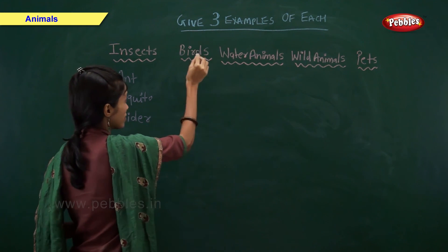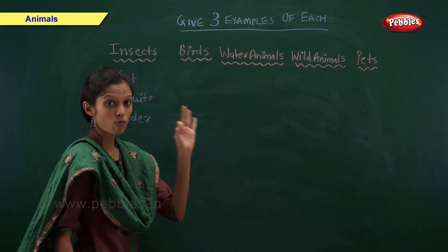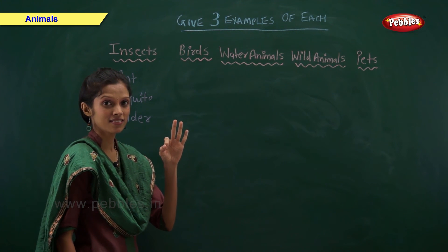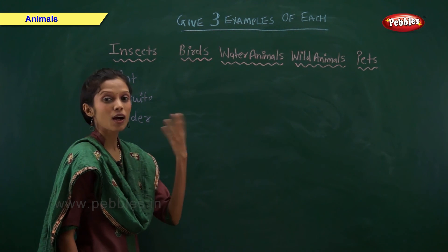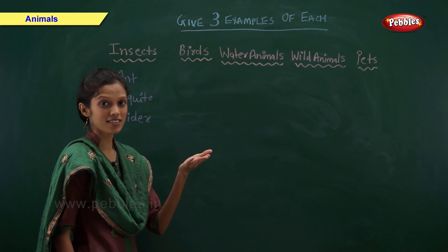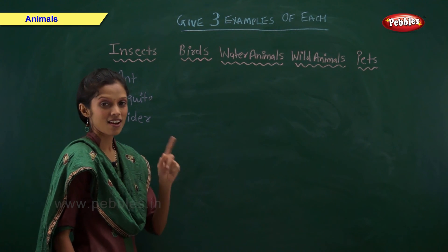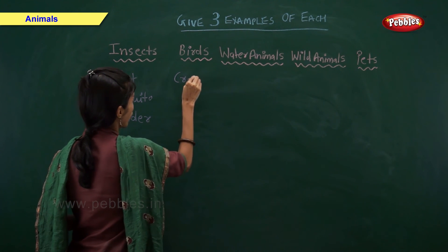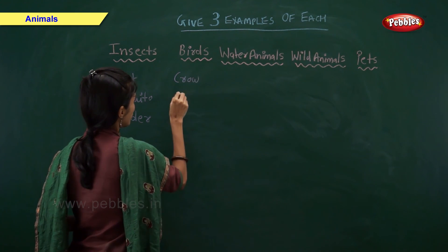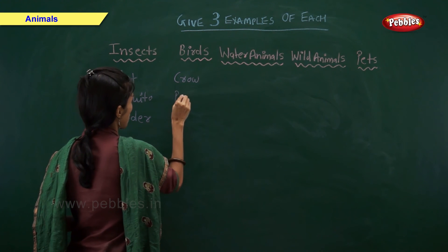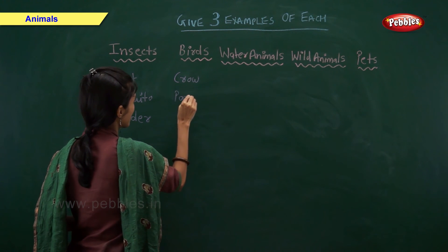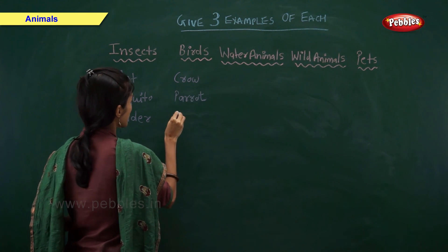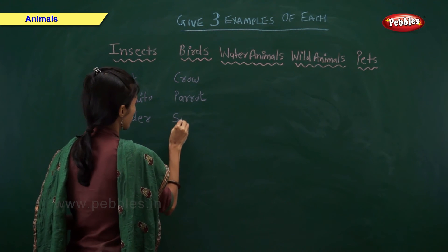Birds — give me three examples of birds. Come on fast. Right: crow, parrot and sparrow.